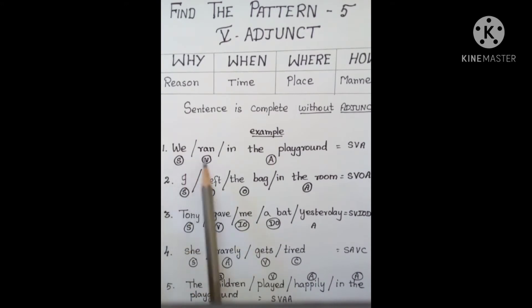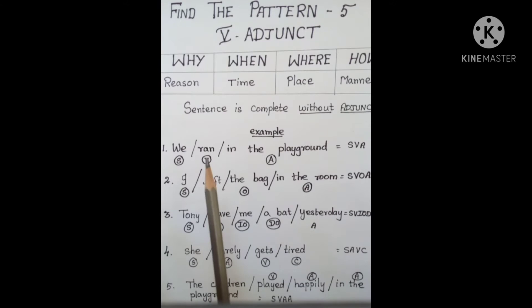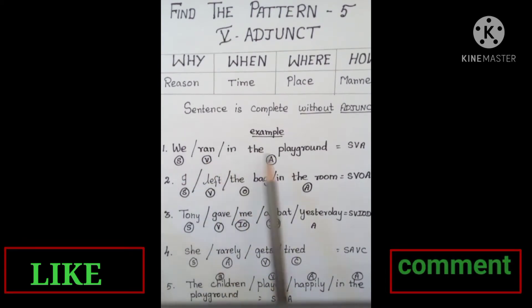We ran in the playground. If you look at this: we is subject, ran is verb, in the playground is the adjunct. If you remove this playground, we ran is still a complete sentence. That is why we say Adjunct. In the pattern, we say SVA.